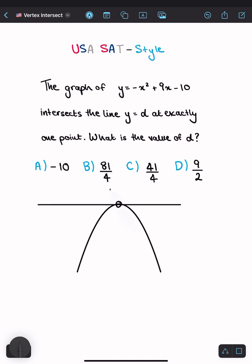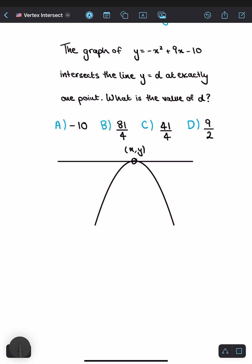Let's say the vertex has coordinates (x, y). The value of d equals the y-coordinate at the turning point. There are three ways to solve this. Since we're finding the turning point, we can start by completing the square.